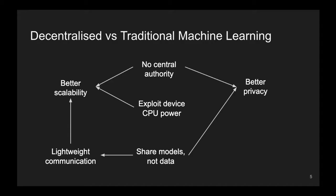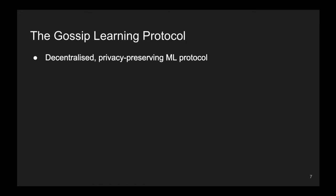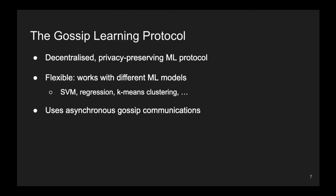This leads us to the Gossip Learning Protocol. It is a decentralized, privacy-preserving protocol that has been shown to be very flexible and able to work with different kinds of machine learning tasks, from regression and classification to clustering. As the name suggests, this protocol uses asynchronous gossip-style communications, where each node, in every round, chooses a random peer and sends its model to it.